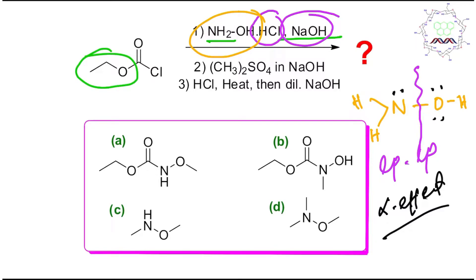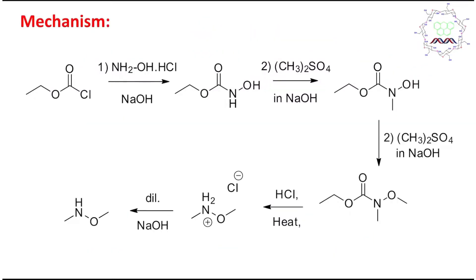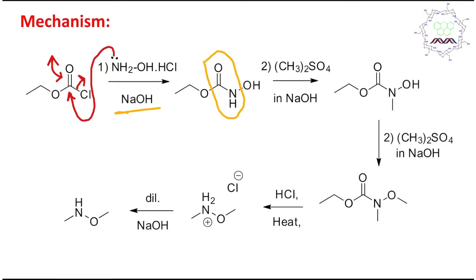Both nitrogen and oxygen carry lone pairs, but nitrogen is more nucleophilic because its electronegativity is lesser. So the nucleophilic attack will be initiated from the nitrogen side. In the first step, after the neutralization reaction, the lone pair of nitrogen attacks — it is nothing but acyl nucleophilic substitution. Cl will leave, and ultimately in basic medium, after nucleophilic attack by hydroxylamine, the positive charge is neutralized. This produces an amide derivative by hydroxylamine.